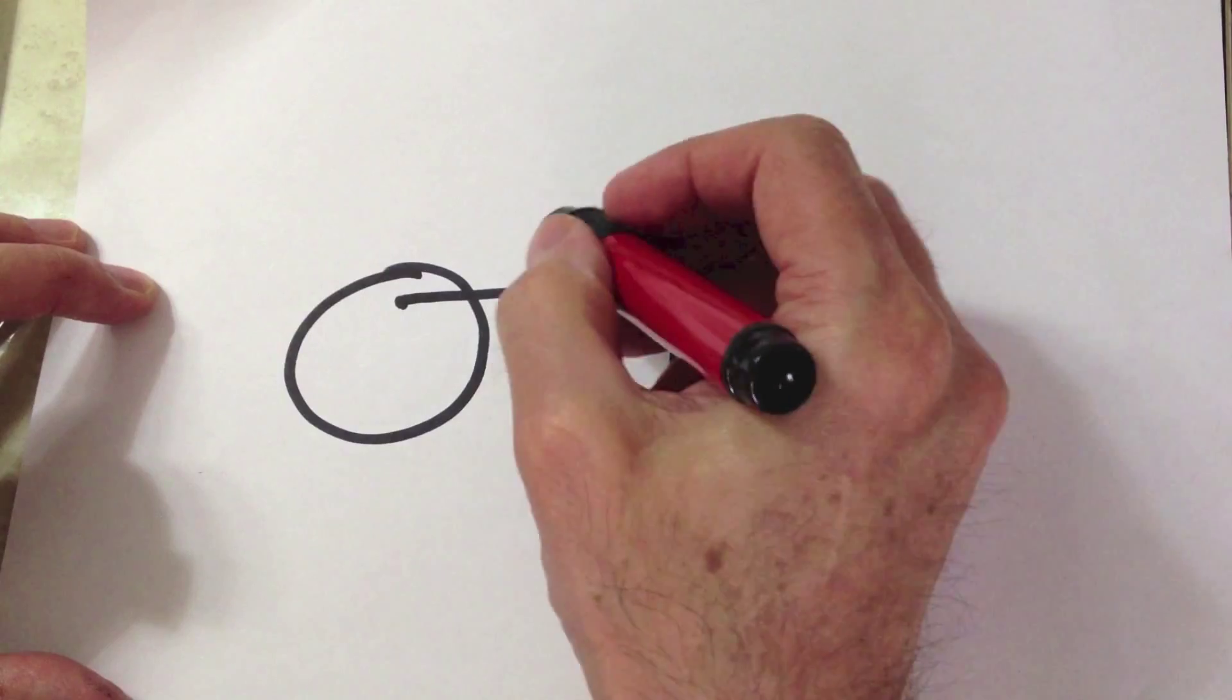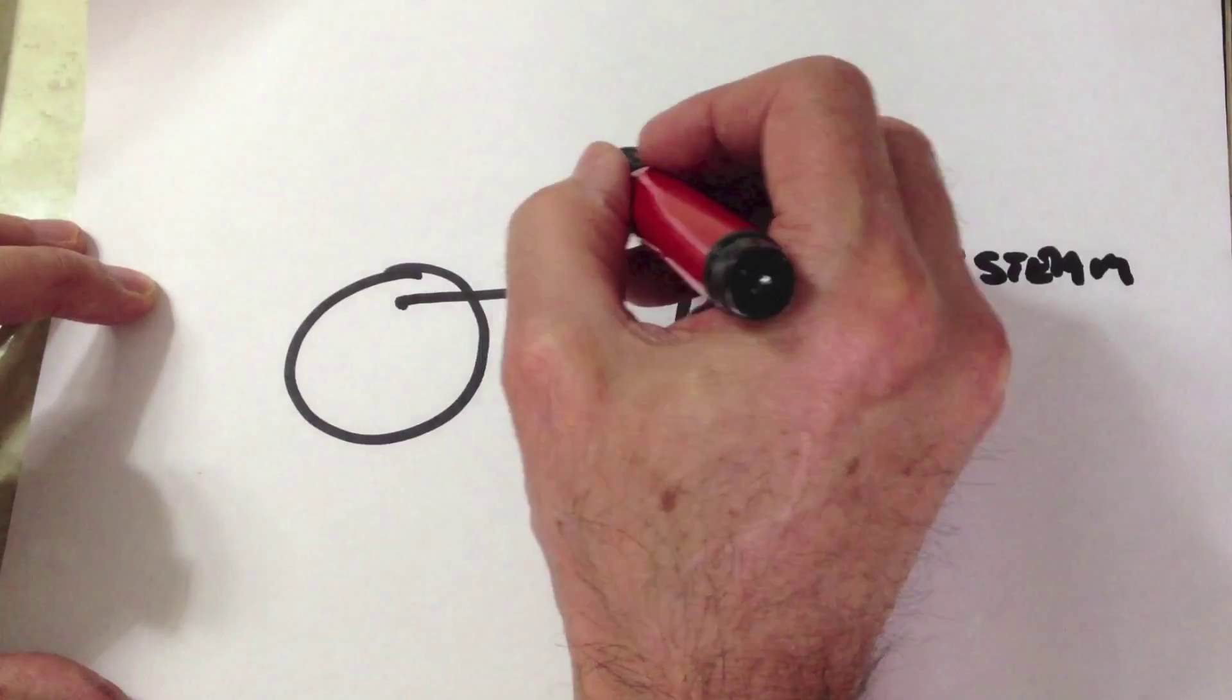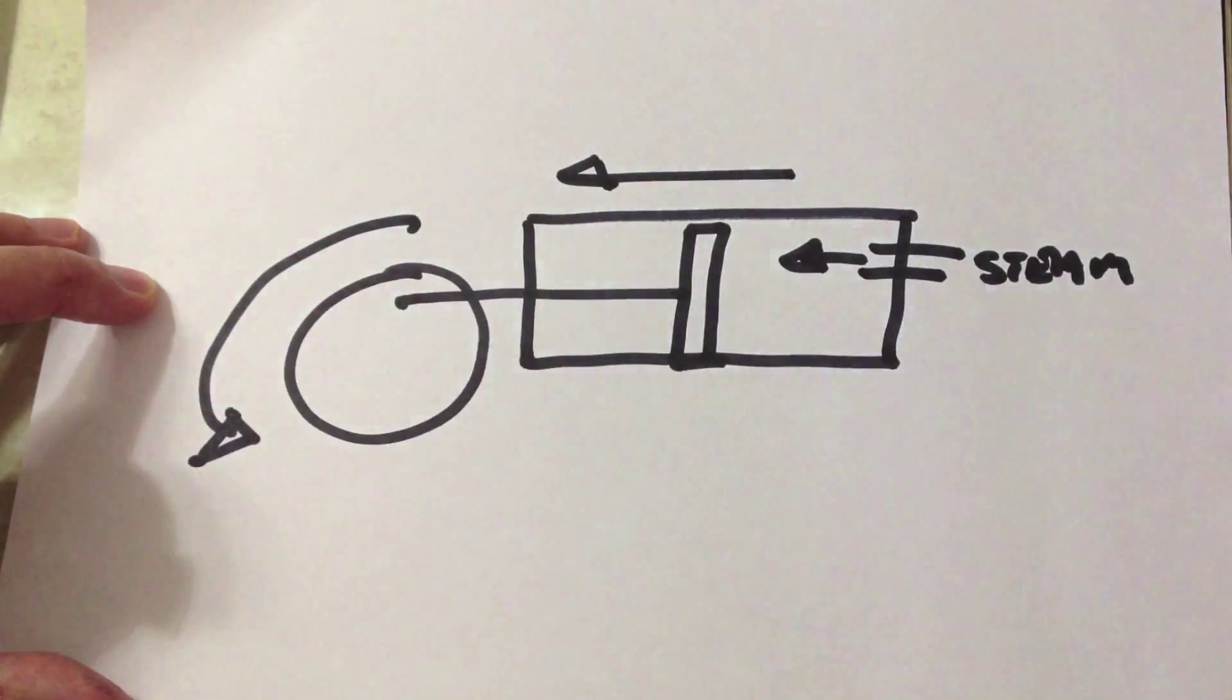We start out with an axle and a piston. The piston sits inside a box called a cylinder. The steam pushes against the piston and makes the axle go around.